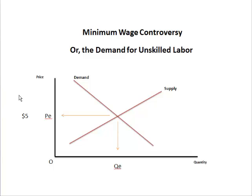So we look at this graph and it's our normal setup: we have price on our vertical axis, we have quantity on our horizontal axis, and this would be the demand for unskilled labor right here.